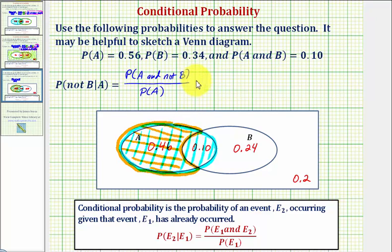So notice how to find this conditional probability. We take the probability of A and not B, which is the probability of only A, which is 0.46, and we divide by the probability of A, which we know is given as 0.56, which is also the sum of these two probabilities.